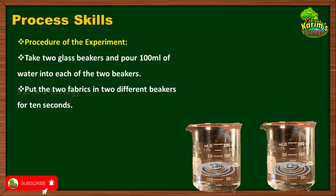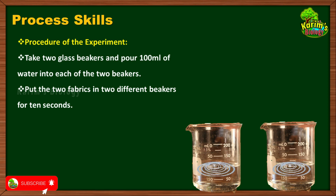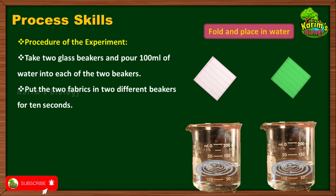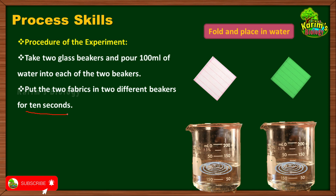She puts the two fabrics into two different beakers for 10 seconds. Here comes the third variable. The first variable was size of the two fabrics, the second was amount of water in the beakers. The third variable is time duration — both fabric pieces should be dipped in the water for exactly 10 seconds, not more and not less. It is very important that both cotton fabric and synthetic fabric are kept in water for exactly 10 seconds.